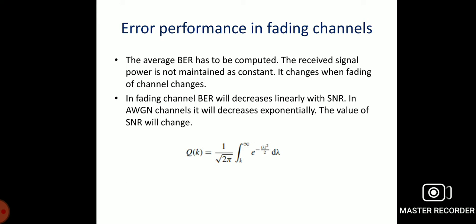The average bit error probability has to be computed. The received signal power is not maintained at a constant level — it changes when the fading of the channel changes. So in the fading channel, the bit error rate decreases linearly with the signal-to-noise ratio.